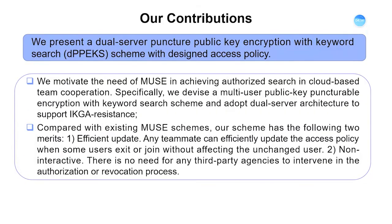We summarize the contributions of our scheme as follows. First, we motivate the need for our MUSE scheme in achieving authorized search in cloud-based team cooperation. Specifically, we devise a multi-user public key puncturable encryption with keyword search scheme and adopt a dual server architecture to support IKGA resistance. Compared with existing MUSE schemes, our scheme has two merits: efficient update, where any teammate can efficiently update the access policy when users exit or join without affecting unchanged users; and non-interactive, meaning no third-party agencies need to intervene in the authorization or revocation process.